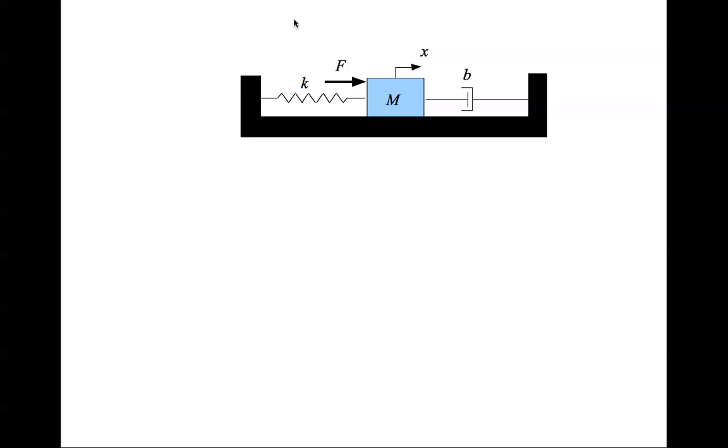Now in this figure we see that there is a mass M which is connected to a linear damper on the right side and a linear spring on the left side.